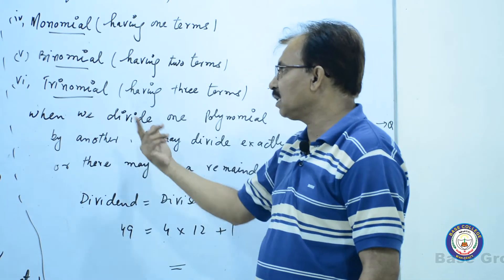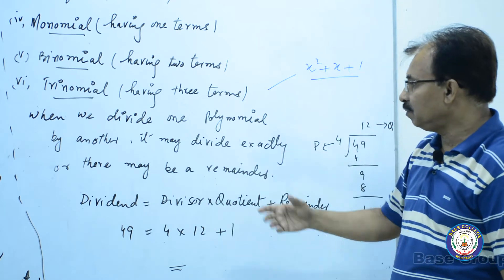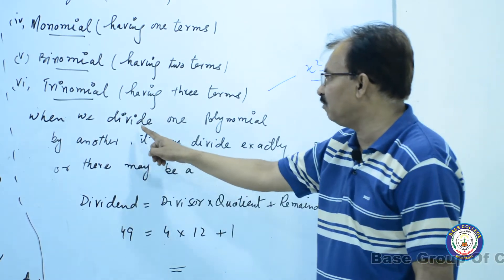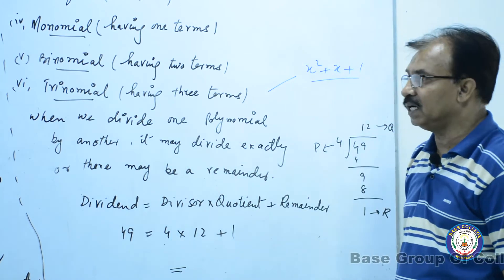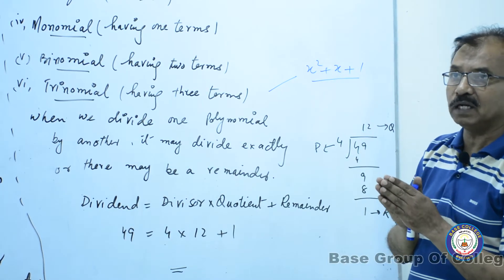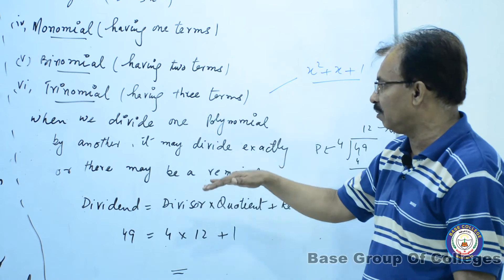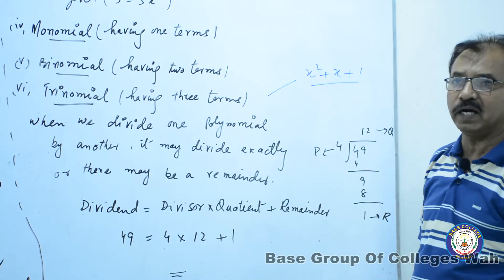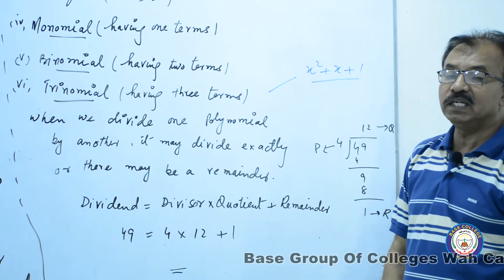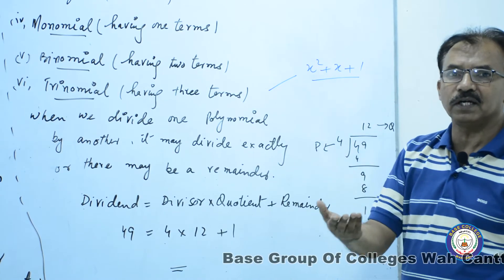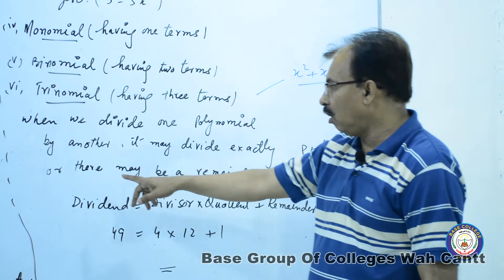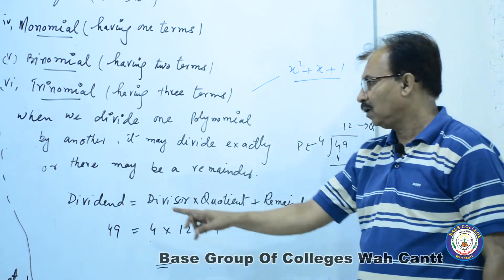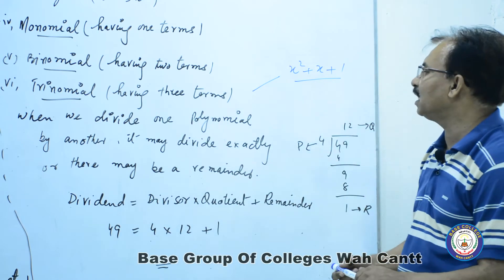when we divide one polynomial by another۔ اگر ہمارے پاس دو polynomials ہیں اور ہم ایک کو دوسرے پر divide کرتے ہیں، تو it may divide exactly: ایسا بھی ہو سکتا ہے کہ کوئی number پورا divide ہو جائے، remainder zero آئے۔ اور there may be a remainder: یا ایسا بھی ہو سکتا ہے کہ کوئی remainder آ جائے۔